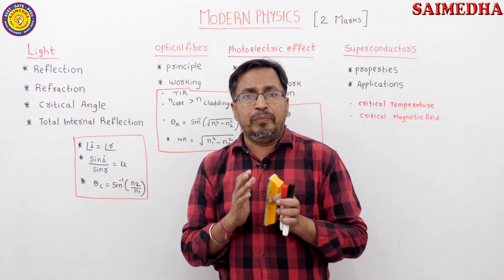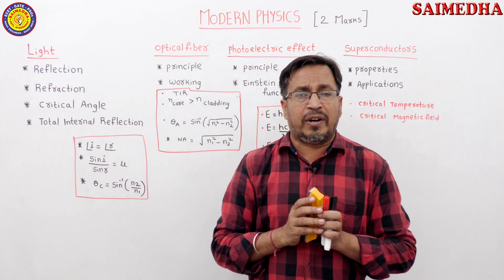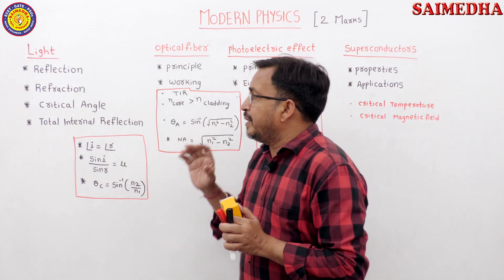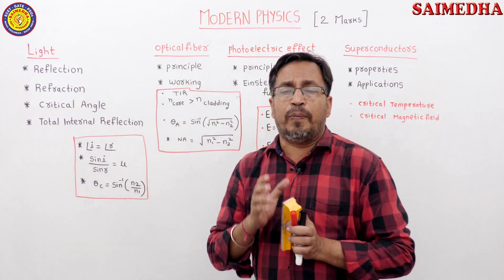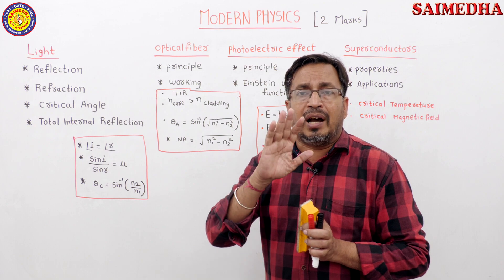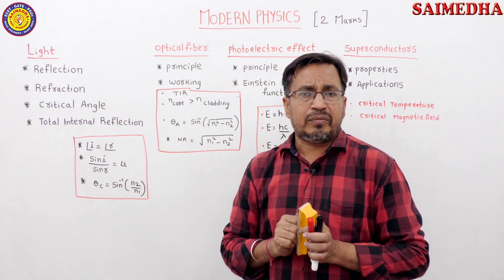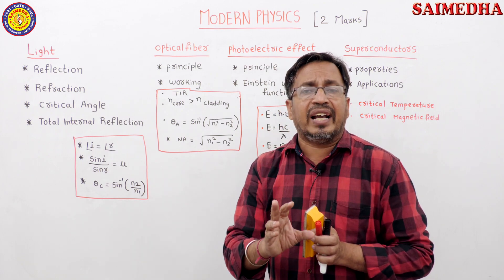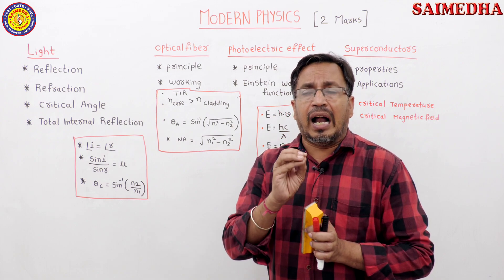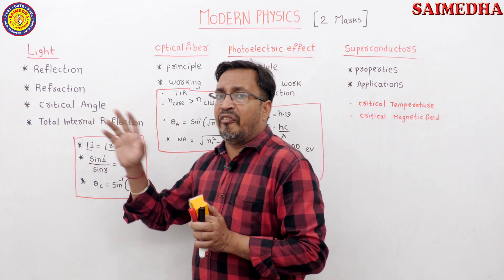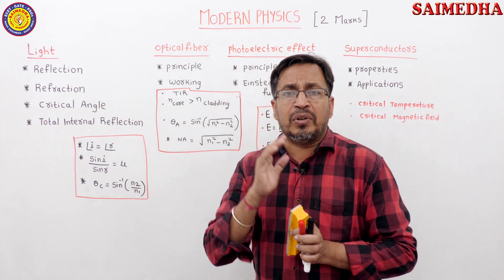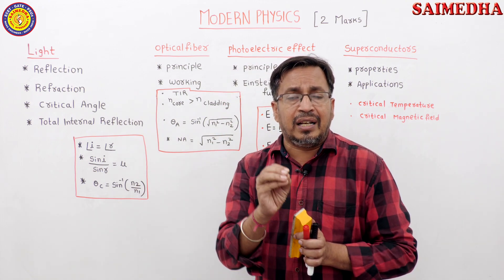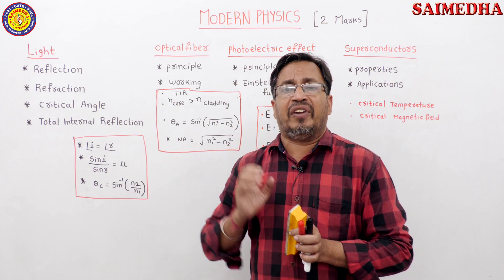So first, let's talk about what you can call light. We are discussing here four topics: Reflection, Refraction, Critical Angle and Total Internal Reflection.